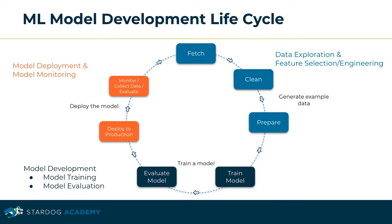Before going into discussing the Stardog services available to support you in your machine learning model development, it is important to understand the steps of the machine learning model development lifecycle. The first step is about the data exploration and feature selection engineering process. In this step, data scientists look into exploring, fetching, cleaning and preparing the data in a way that is ready as input to train a model. We also refer to processes such as data collection, data normalization, and data modeling. Feature selection is about selecting the most relevant attributes to use as input to the training of our machine learning model, and feature engineering is about creating new input features from our existing ones.